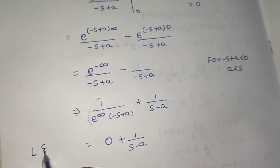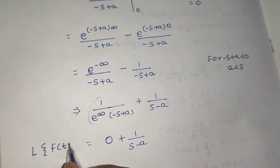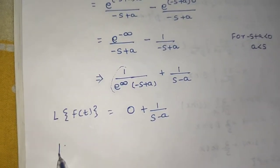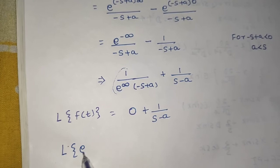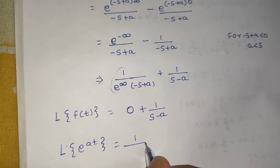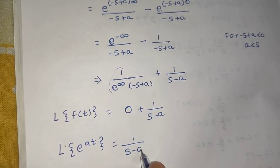So, Laplace of f of t is your 1 upon s minus a. F of t was nothing but e power at. So, Laplace of e power at is 1 upon s minus a.